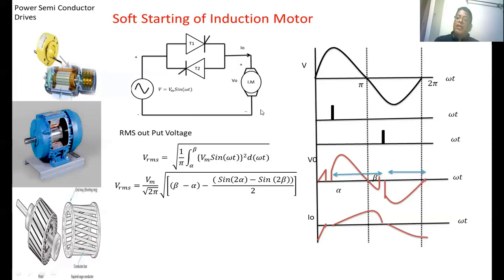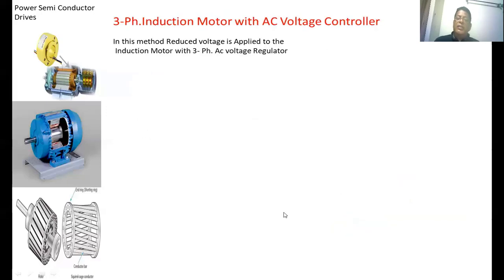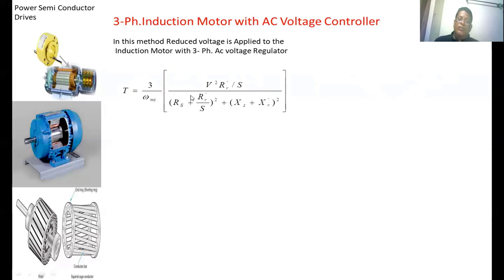Sometimes this circuit is also used to control the speed of an induction motor. If the rating of the induction motor is very high, use two anti-parallel SCRs. For lower ratings, a TRIAC is used between the source and the load circuit. For three phase induction motor with AC voltage control, we apply the reduced voltage by means of a three phase AC voltage regulator. The torque developed in a three phase induction motor is equal to 3 by omega_s times V squared times R_r' by S, divided by (R_s plus R_r'/S) squared plus (X_s plus X_r') squared. If the slip is high, the torque is directly proportional to V squared, where V is the applied voltage. If you decrease the voltage, the torque decreases and the speed of the induction motor also decreases.